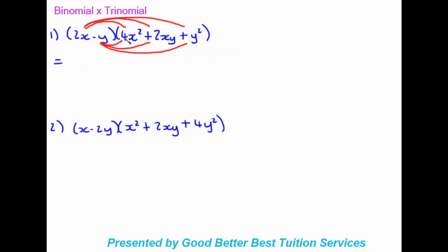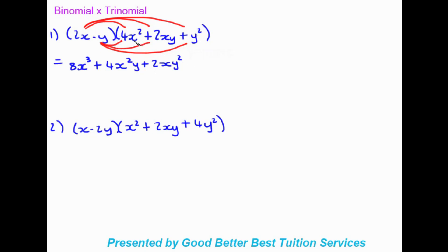Working through the binomial times trinomial: 2x times 4x squared gives 8x to the power of 3. 2x times 2xy gives positive 4x squared y. 2x times y squared gives positive 2xy squared. Now for the second term: negative y times 4x squared gives negative 4x squared y. Negative y times 2xy gives negative 2xy squared.